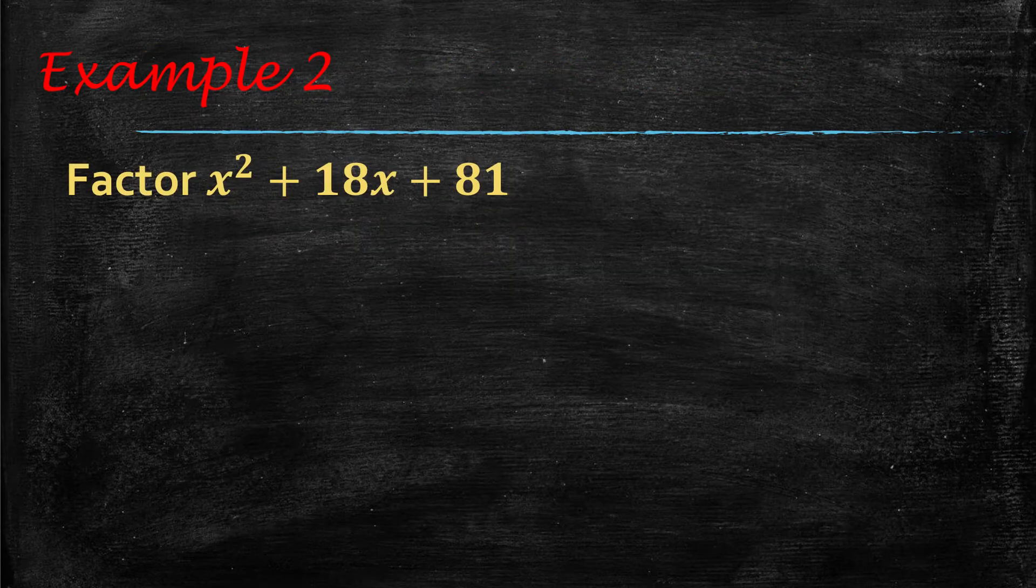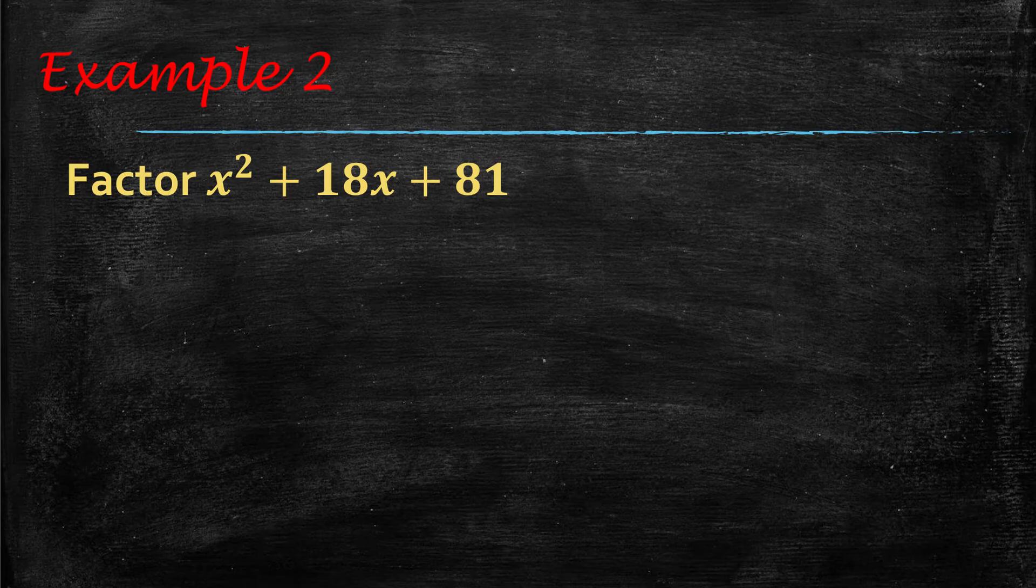So here's an example of a perfect square trinomial. Now, sometimes you don't recognize that it's a perfect square trinomial, and that's fine. If you don't recognize that it is one, you can still use the grouping method.